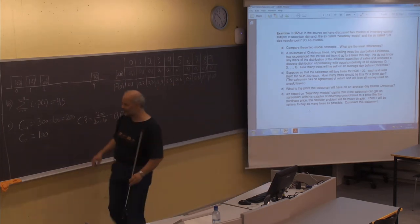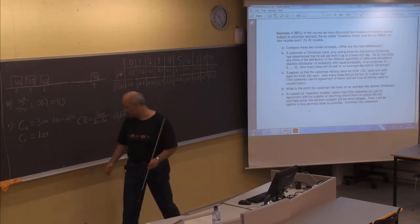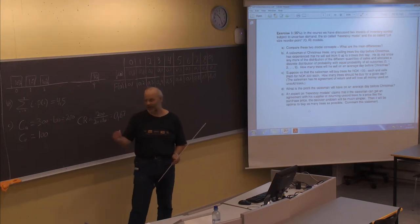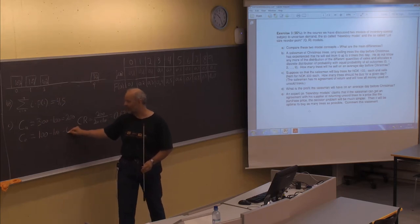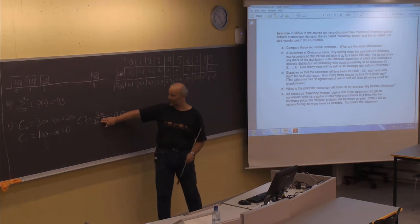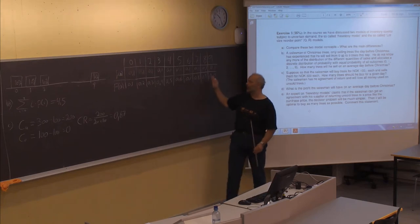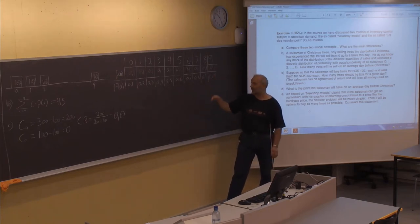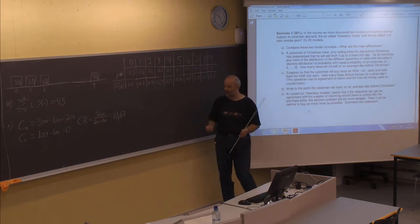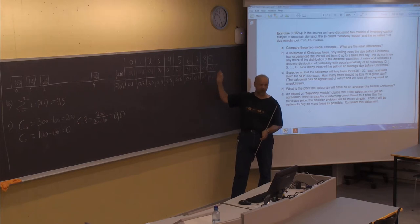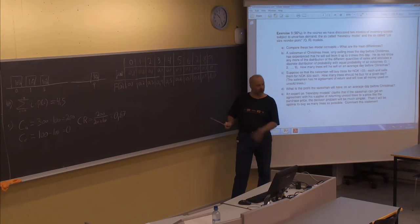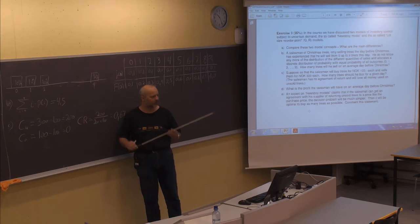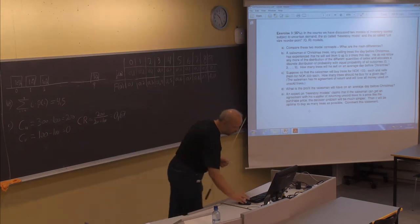In this case, the return value equals the purchase price, so the overage cost becomes 0. With an overage cost of 0, the critical ratio is 200 divided by 200, which equals 1. Of course, you should then buy as much as possible, because you will not lose anything — you can deliver goods back if you are not selling them, and in some cases you are able to sell all of them.